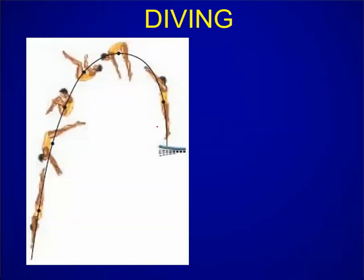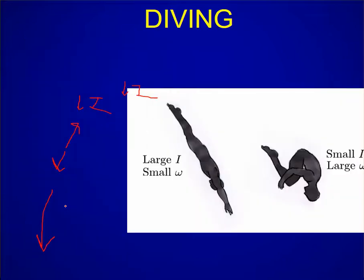Diving: you jump off, create angular momentum, and then you tuck — decreasing the moment of inertia (I). You continue to tuck, further decreasing I. You get some rotations in, and then you untuck, increasing your moment of inertia to slow down the rotation so you can enter the water without a splash. So: large I means small angular velocity; small I means greater angular velocity.